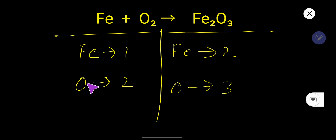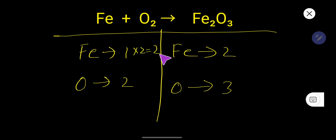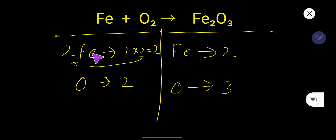To balance this equation, we have to balance the number of iron and oxygen from both sides. Let us balance iron first. Here iron is 1, here it is 2. If you multiply here by 2 that gives you 2 — this coefficient must come before the atom. So place 2 before Fe. Now iron 2 and 2 is balanced.